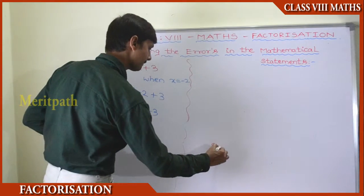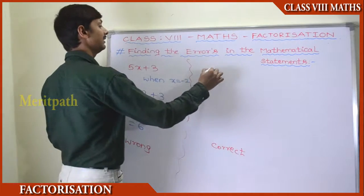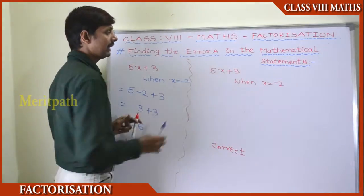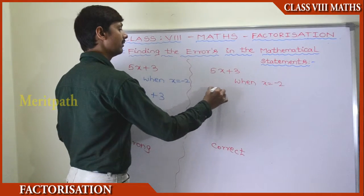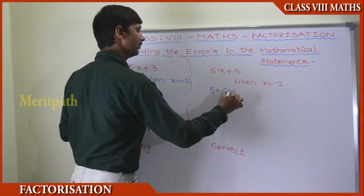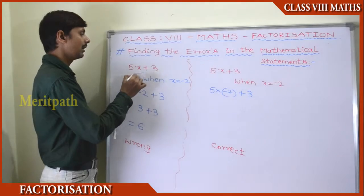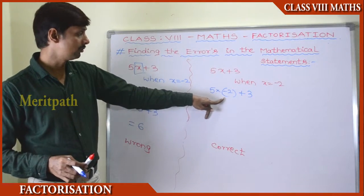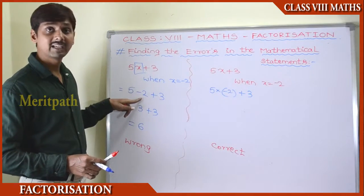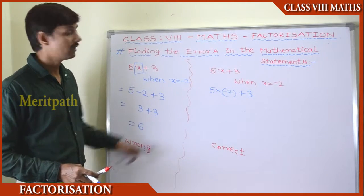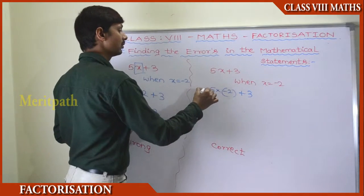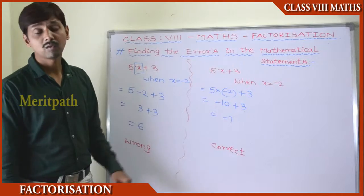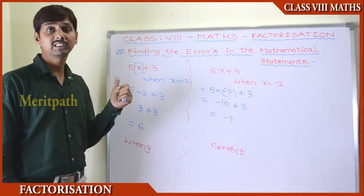The correct process: for 5x + 3 with x = −2, whenever a variable is in multiplication form with a coefficient, we must use brackets. So 5(−2) + 3 = −10 + 3 = −7. The correct answer is −7. The mistake was substituting −2 without brackets, giving the wrong answer of 6. Always use brackets when substituting a value for a multiplied variable.